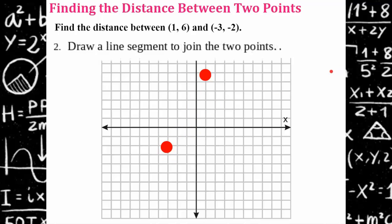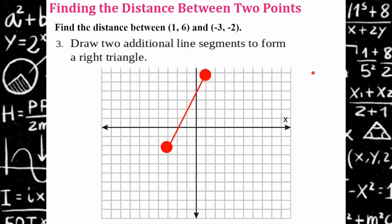Step two, draw a line segment to connect the two points. Step three, draw two additional line segments to form a right triangle. Part of that step, you want to find the units of the measurement of the two legs. So one, two, three, four, five, six, seven, eight units for this leg and four units for the smaller leg.